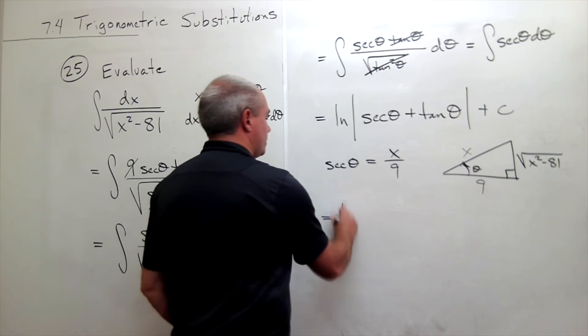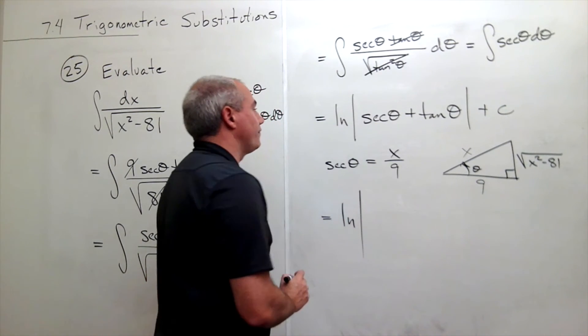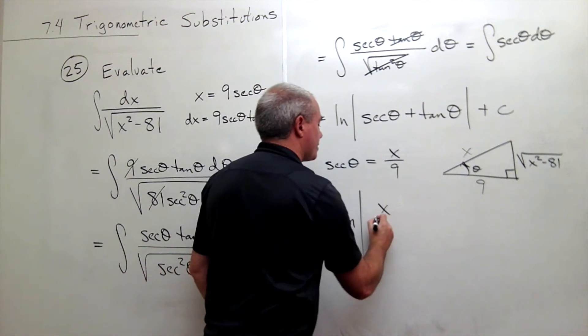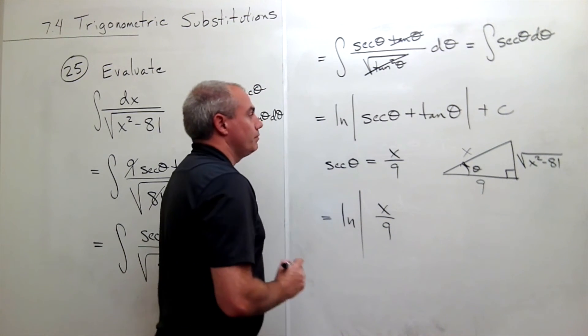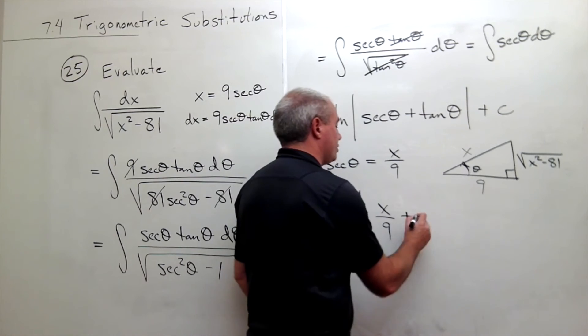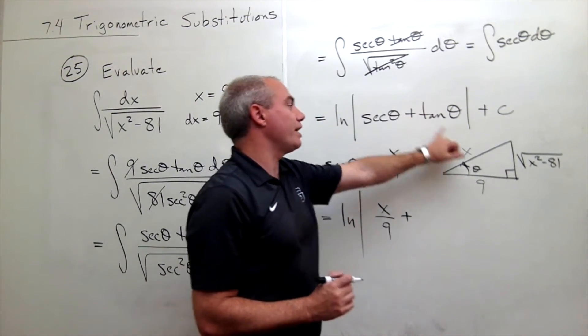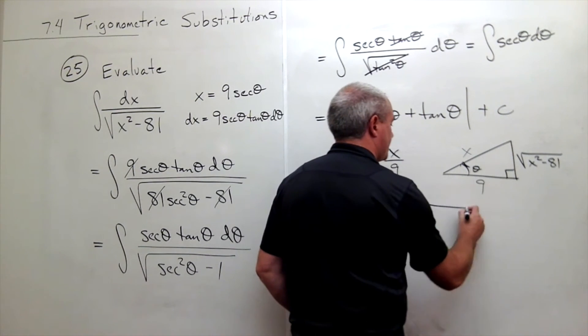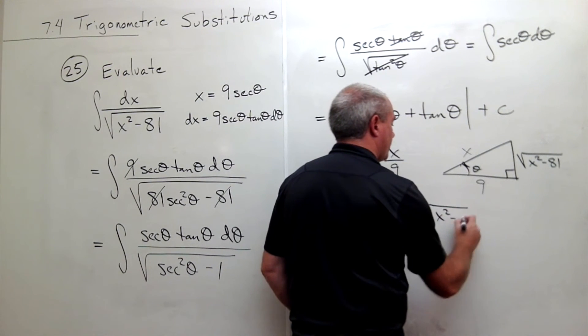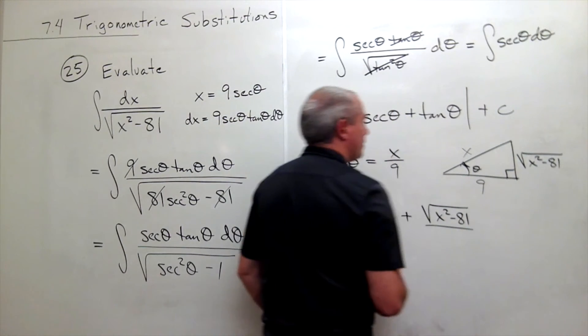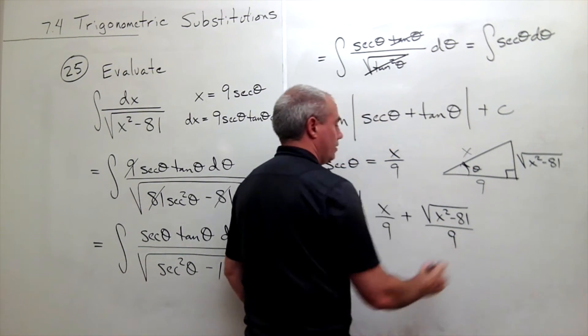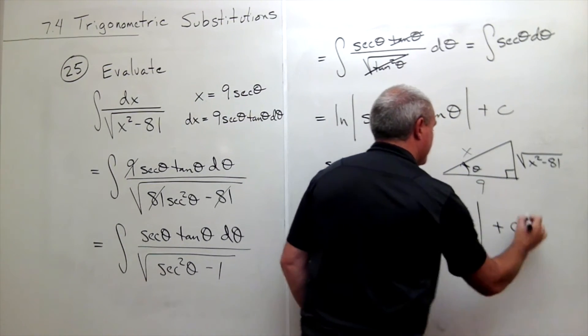This equals ln of the absolute value of secant theta, which is x over 9, plus tangent theta. Tangent theta is opposite over adjacent, so that's the square root of x squared minus 81 over 9, plus c.